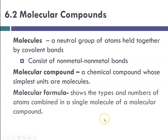A molecular formula shows the types and numbers of atoms combined in a single molecule of a molecular compound. For example, two chlorines bonded together is Cl₂, showing two chlorines. And water, H₂O, tells us there are two hydrogens bonded to one oxygen.